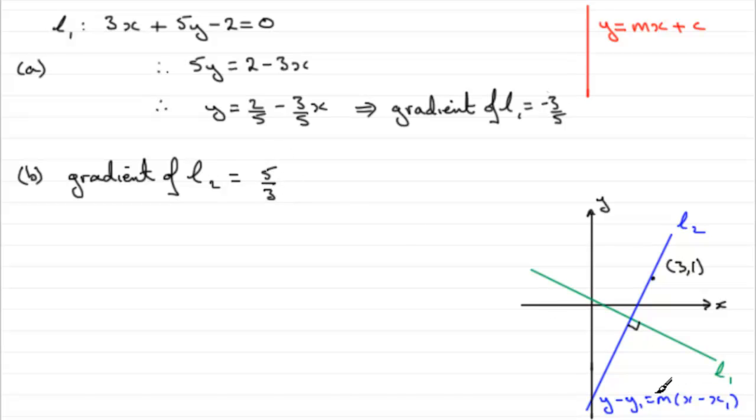Now we've got that, we can get the equation of the line. So I would put, therefore, the equation of L2 is, try not to write equals there, common mistake. Equation of L2 is, and then it's going to be y minus y1, which is going to be the 1 here, equals m, 5 thirds in this case, bracket x minus x1, and x1 is the 3.